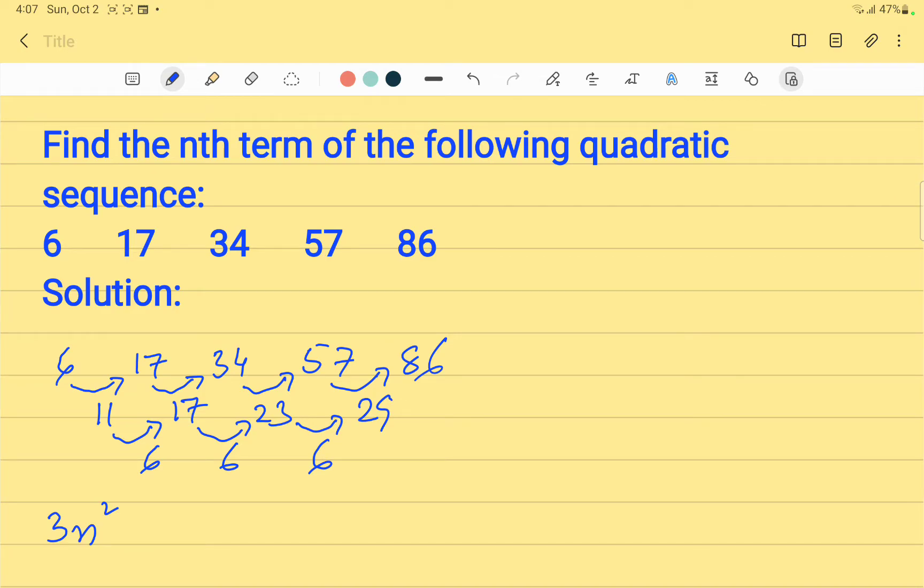Let us write the series for this 3n². When we put the value of n as 1, the answer is 3. For n equals 2, it's 12. For n equals 3, it's 27. For n equals 4, it's 48. And for n equals 5, it's 75.